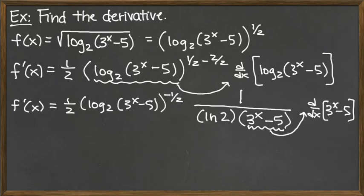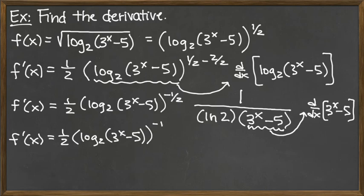And finally, we have finished the nested chain if we'll just take that final derivative. So let's do that. We've got f prime of x equals one-half, and then we've got the factor log base 2 of 3 to the x minus 5, and that whole thing is raised to the negative one-half power.